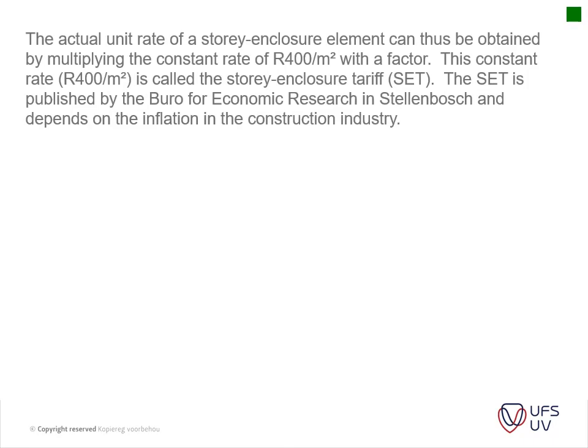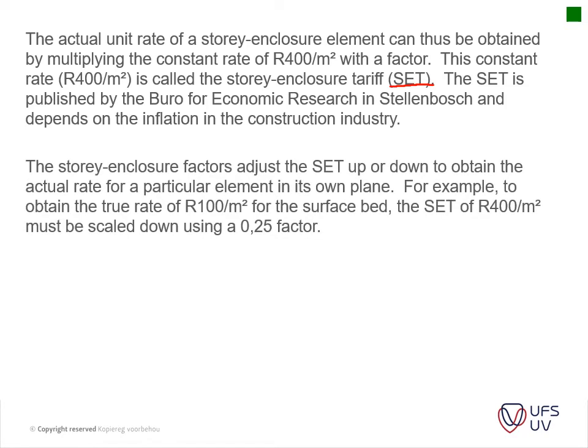The actual unit rate of a story enclosure element can be obtained by multiplying the constant rate of 400 rand per square meter with a factor. This constant rate of 400 rand per square meter is called the Story Enclosure Tariff (SET), as discussed last week. The SET is published by the Bureau of Economic Research in Stellenbosch and depends on inflation in the construction industry. The story enclosure factors adjust the SET up or down to obtain the actual rate for the particular element in its own plane.